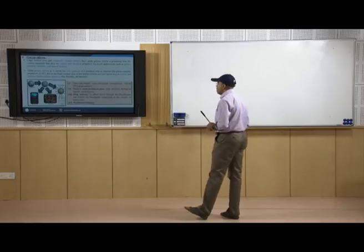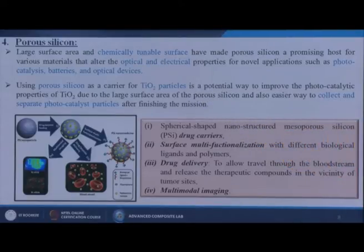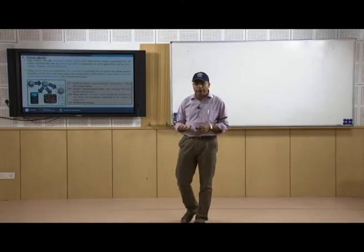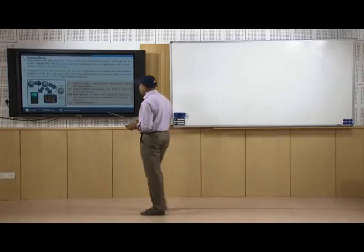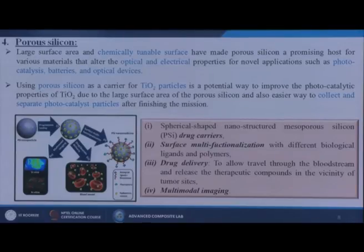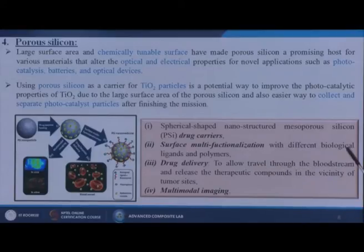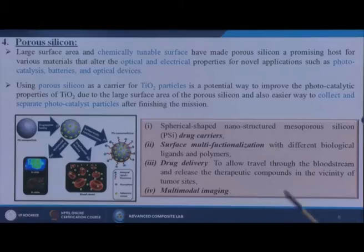Next, porous silicon is applied for different applications. Its large surface area and chemically tunable surface have made porous silicon a promising host for various materials that alter optical and electrical properties for applications such as photocatalysis, batteries, and optical devices. Using porous silicon as a carrier for TiO2 nanoparticles is a potential way to improve photocatalytic properties of TiO2 due to its large surface area, and it provides an easier way to collect and separate photocatalyzed particles after use.